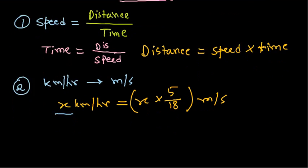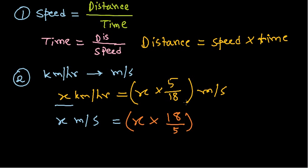Similarly, if you need to convert from meters per second into kilometers per hour, the formula is: x meters per second equals x multiplied by 18/5 kilometers per hour. Simply swap the fraction — multiply by 18/5 to go from m/s to km/h, and multiply by 5/18 to go from km/h to m/s.